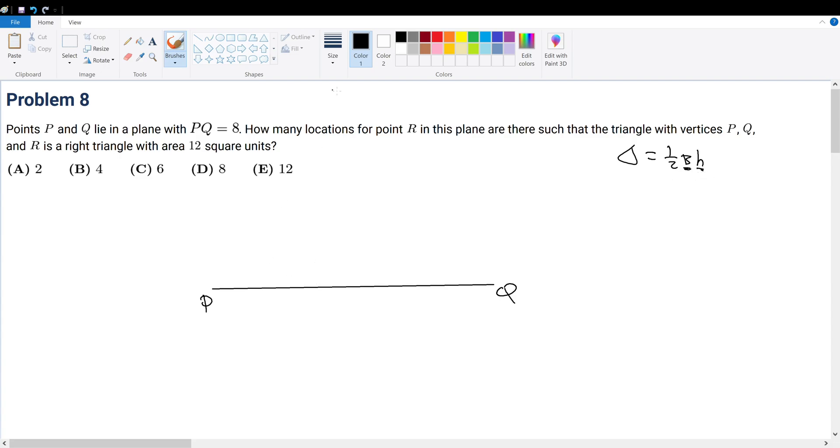So right off the bat, what we can see here is intuition leads us to put R right here. Because we form a right angle here, then PR becomes the height. So conveniently, we can create PR to be some x such that x times 8 divided by 2 gives 12. But that's beyond the point. We can always find such an R right here, but likewise we can find an R right here.